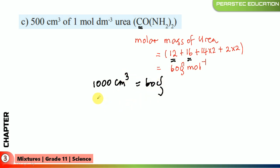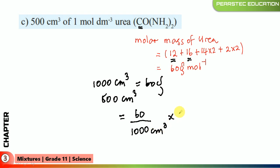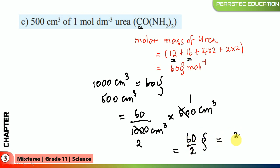60 grams per mole is for 1000 cubic centimeters. For 500 cubic centimeters: 60 ÷ 1000 × 500 = 60 ÷ 2 = 30 grams. So 30 grams of urea is required.